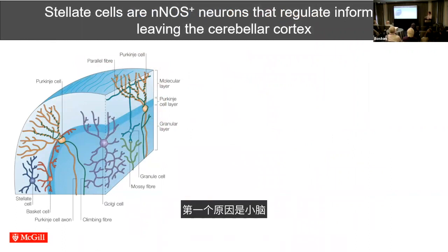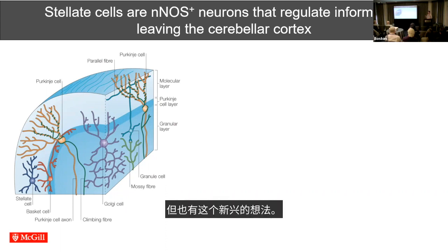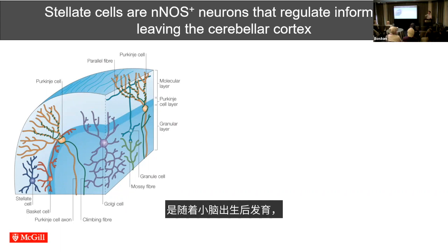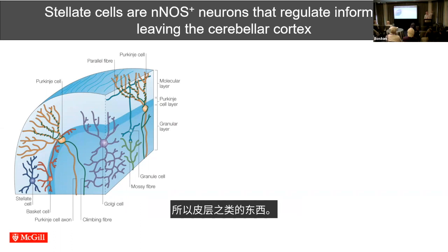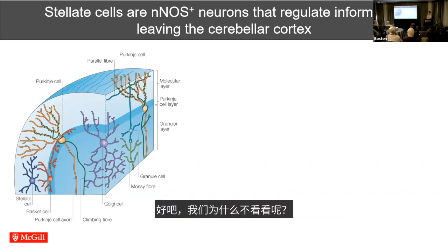The first reason is that the cerebellum develops postnatally — it develops after birth. There was also this emerging idea, coming mainly from clinical work and looking at patients, that as the cerebellum develops postnatally, it actually drives information out of the cerebellum that helps drive the maturation of much higher centers like the cortex. We thought that was a really interesting hypothesis, and since we had some expertise in the cerebellum, we decided to look at that.